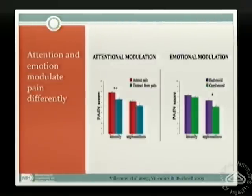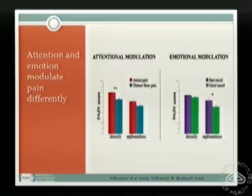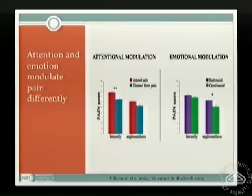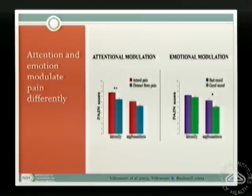When you distract a person from a painful stimulus, we find that it primarily modifies how intense the person experiences the sensation, with usually no significant effect on how much it bothers them. On the other hand, with emotional modulation — say you give a person pain when in a good mood versus a bad mood — changing the mood state doesn't alter the perception of intensity, but it dramatically affects how much the pain bothers you. So while attention alters the sensory dimension, emotions modify mainly the unpleasantness dimension of pain.